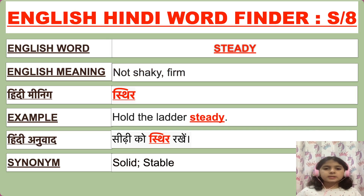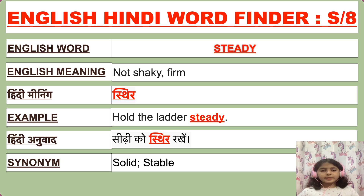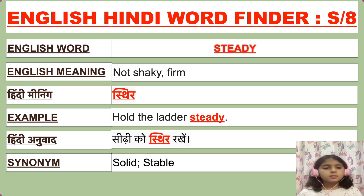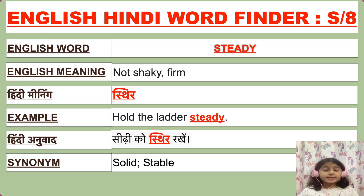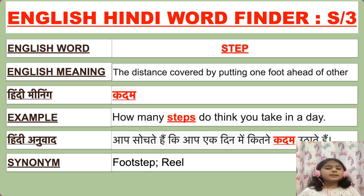Our next English word is 'steady.' The English meaning of steady is not shaky, or firm. Steady ka Hindi meaning hai sthir. For example: 'Hold the ladder steady.' Ishi Hindi mein bolenge: 'Seedhi ko sthir rakhe.' Synonyms of steady are solid and stable. Our next English word is 'step.'